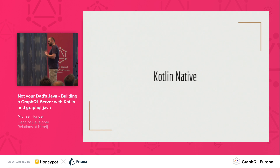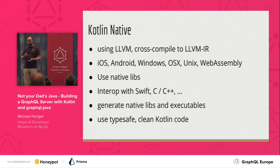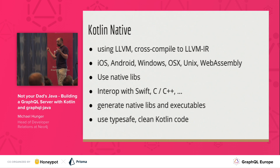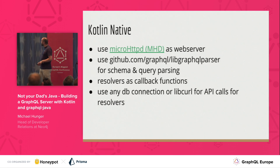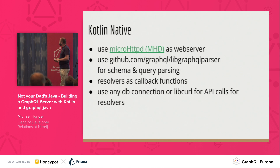Kotlin Native doesn't just compile to JVM and JavaScript — it also compiles using LLVM to any binary: iOS, macOS, Windows, Linux native, Android native, and WebAssembly. You can write things once in Kotlin, use any C libraries you want for performance, and it has great interop with Swift and other native languages. You can also generate libs from Kotlin Native consumed by other native apps. The next goal is to use micro HTTP daemon and LibGraphQL parser to build a C-level native GraphQL server as a demo of that capability, and then connect to any database or consume REST endpoints.